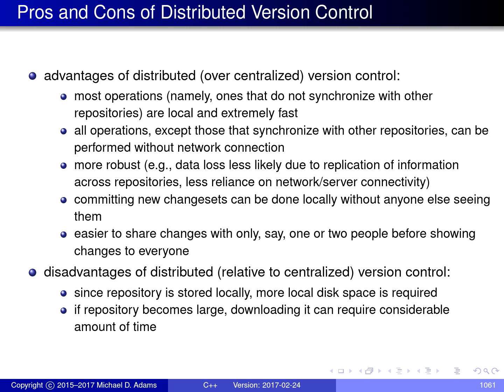With all of the above said, distributed version control does have a small number of disadvantages relative to its centralized counterpart. These disadvantages arise mainly from the replication of repositories. Since repositories are stored locally, more local disk space is required, and the time required to initially replicate a repository can be significant if the repository is large. Since distributed version control has many key advantages over the centralized case, many of the most popular version control systems in use today are distributed.